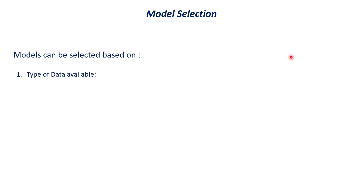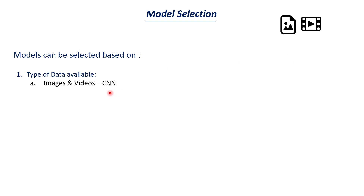Let's understand how we can choose a model based on the data we have. First, let's discuss the type of data available. If we have an image or video dataset, we use a CNN model — CNN stands for Convolutional Neural Network, a deep learning model. Convolutional neural networks work better with images and video datasets compared to other models. It can be a face recognition problem, or predicting whether an image represents a cat or dog — in those cases, we use CNN.